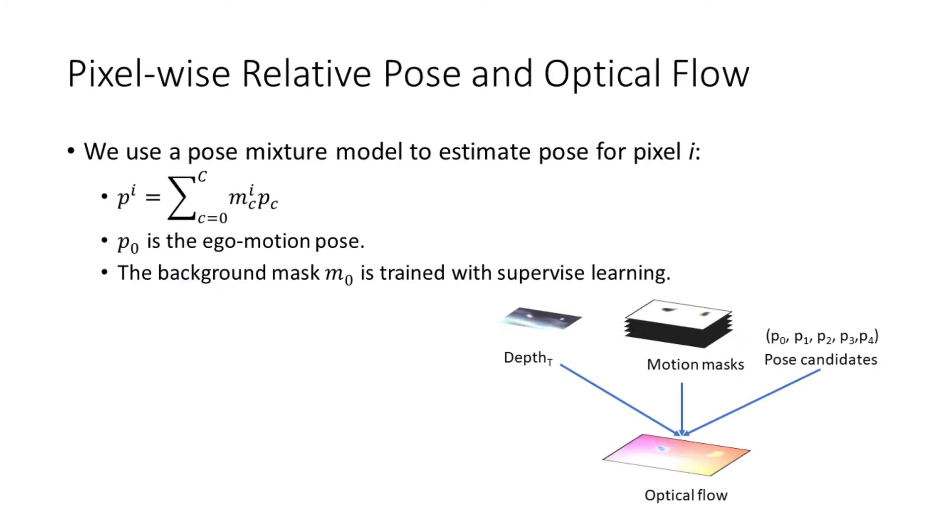Specifically, we use a pose mixture model to estimate point-wise 3D motion. It consists of a set of candidate poses and the motion masks, i.e., pixel-wise probability assignments to the pose candidates, which are learned supervised. The pose at each pixel is derived as a weighted combination of the candidate poses.